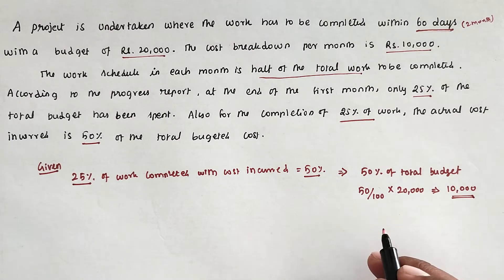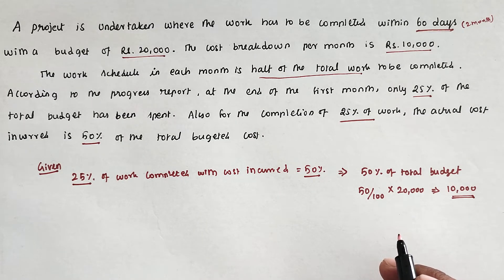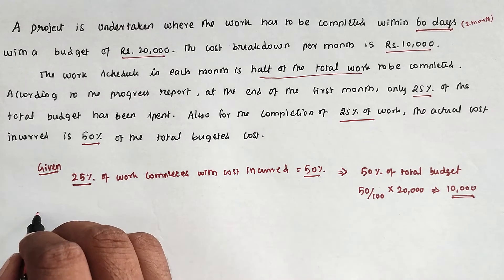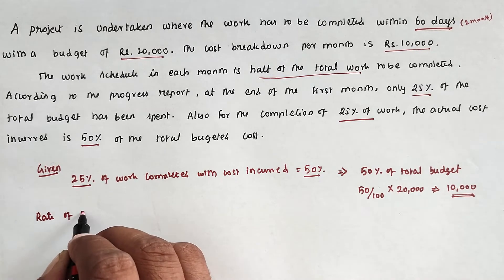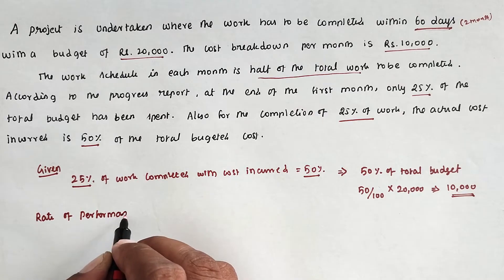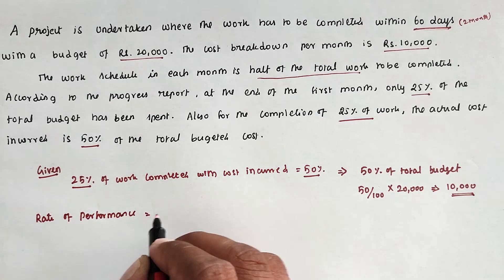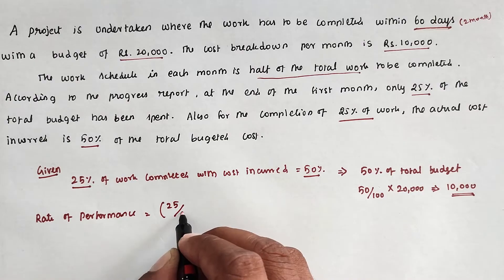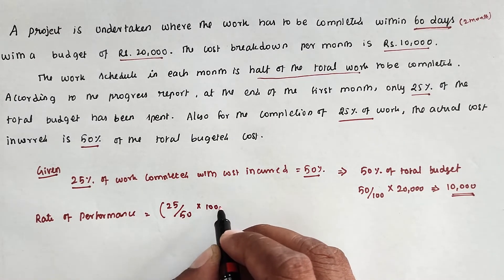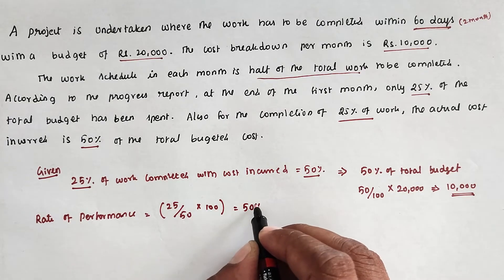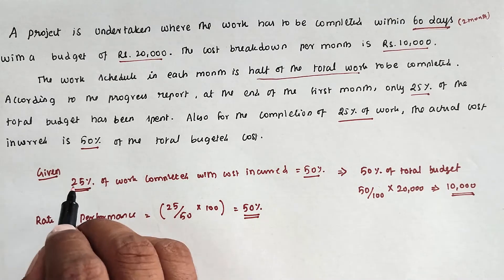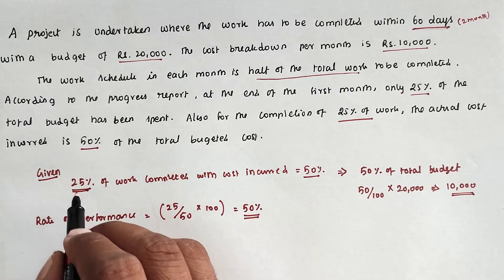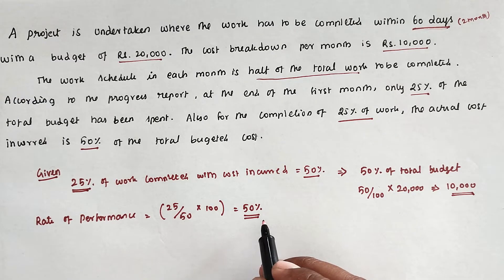The rate of performance can be expressed as a percentage. Rate of performance = 25 divided by 50, multiplied by 100, which equals 50%. So, 50% of work was to be completed within the month, but we completed only 25%, giving a rate of performance of only 50%.